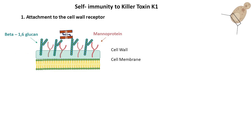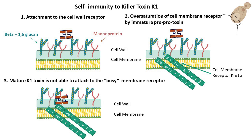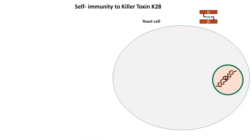The immature toxin attaches to the cell wall receptor of resistant cells. At the same time, the immature PPtox molecule binds to the K1 cell membrane receptor, so that the K1 toxin cannot exploit the cell membrane receptor for its cytotoxic action.